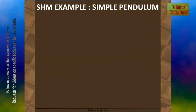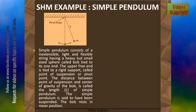Now we shall see the example of the simple pendulum. A simple pendulum consists of an inextensible, light, and flexible string having a heavy but small-sized sphere called a bob. The upper free end is tied to a rigid support called the point of suspension or pivot point. The distance between the point of suspension and the center of gravity of the bob is called the length of the simple pendulum.